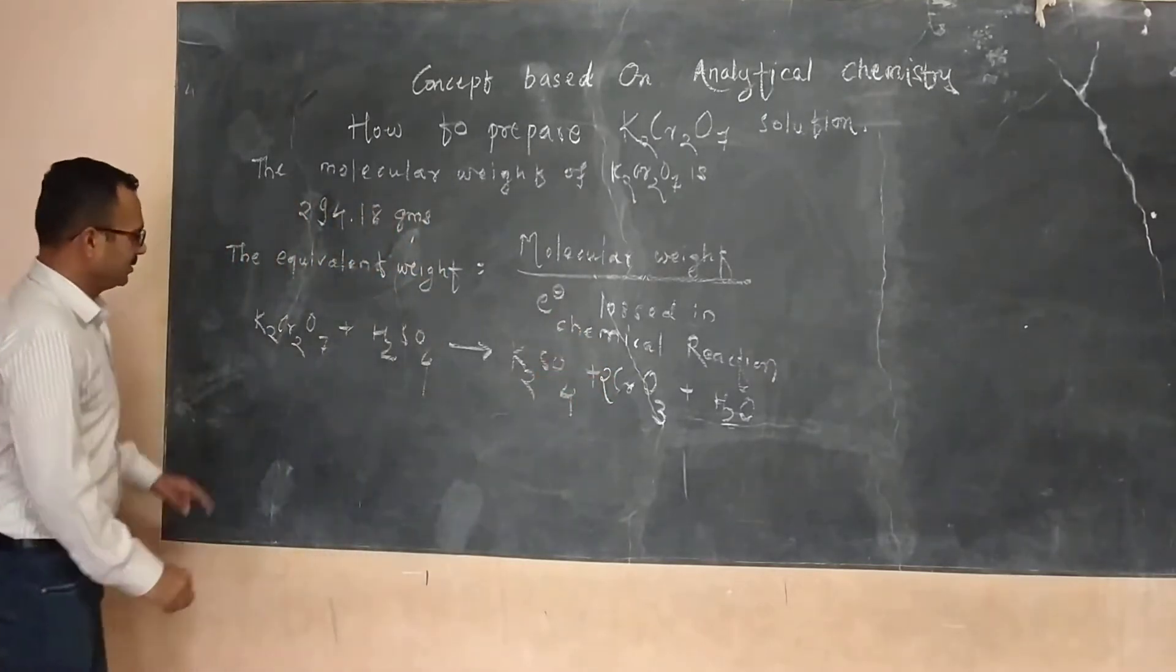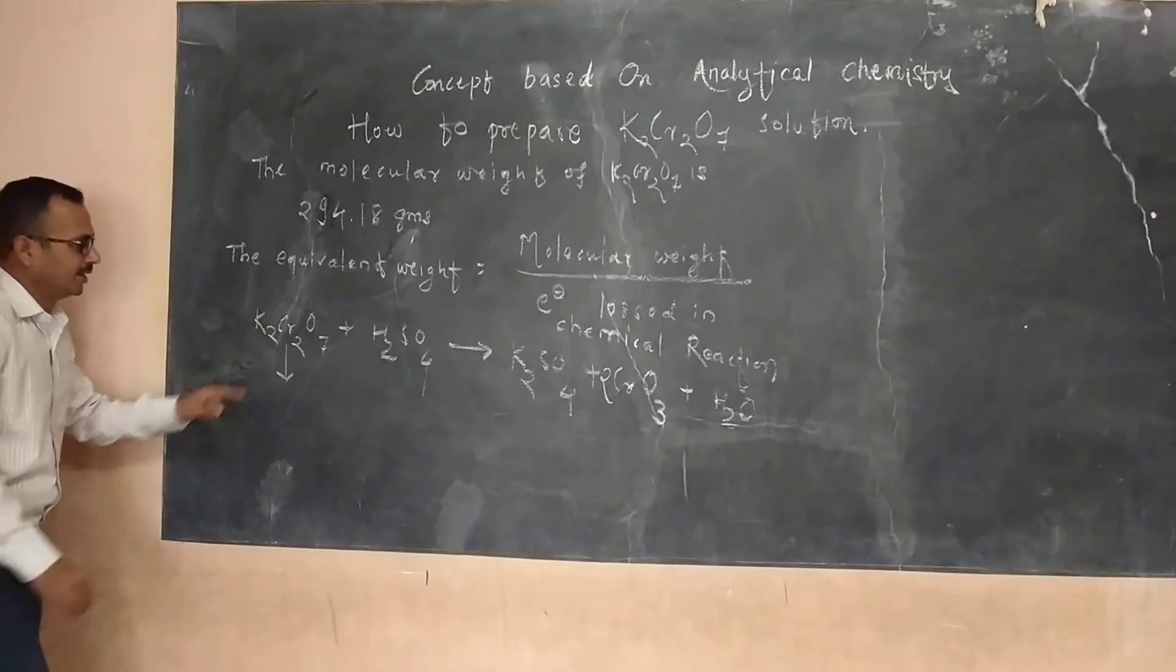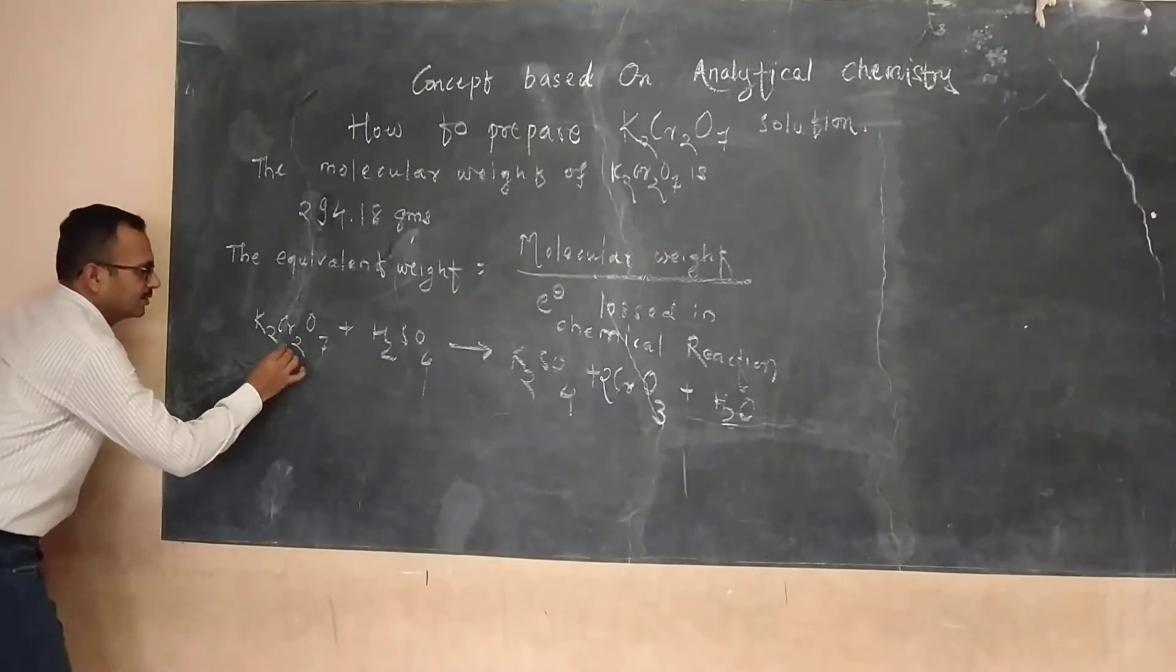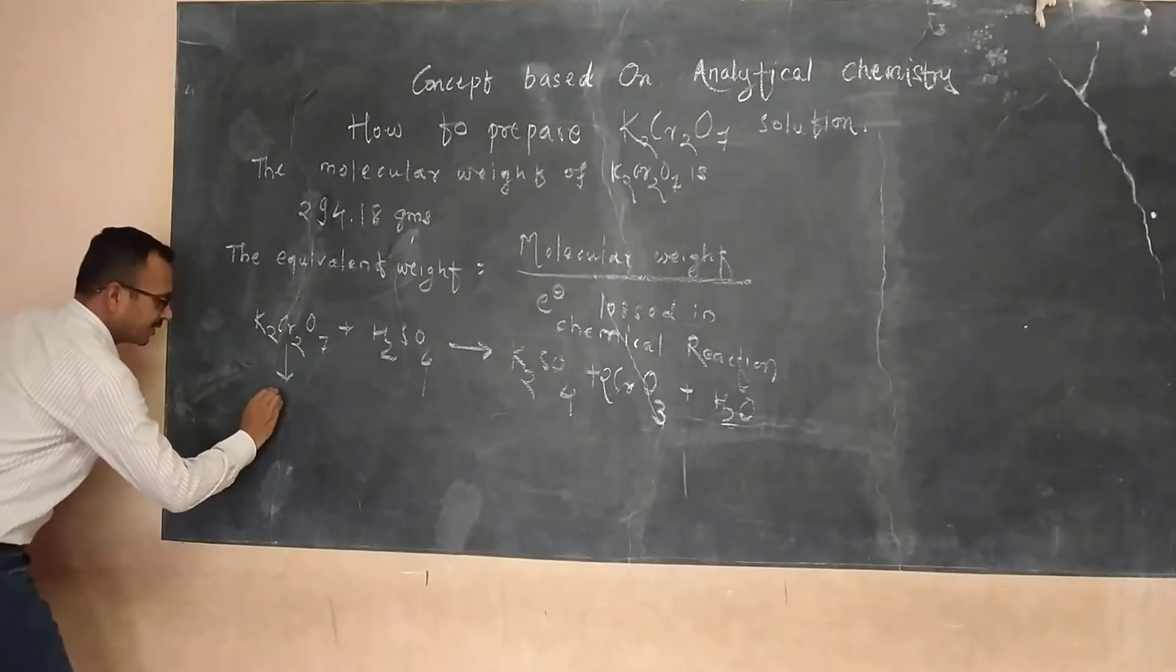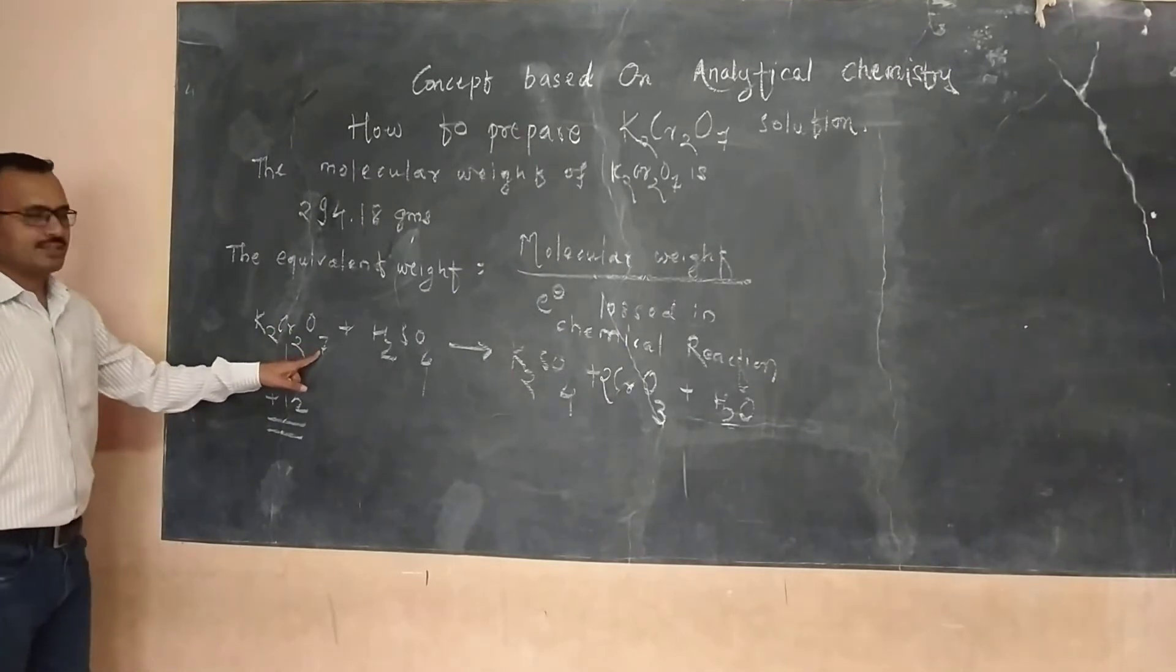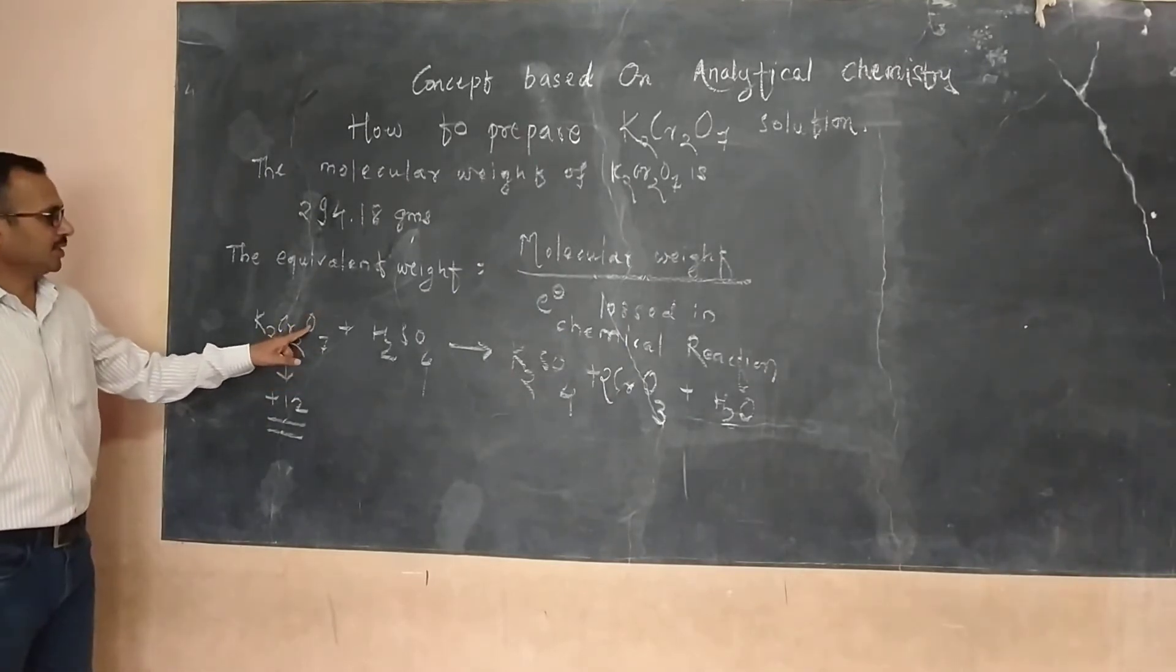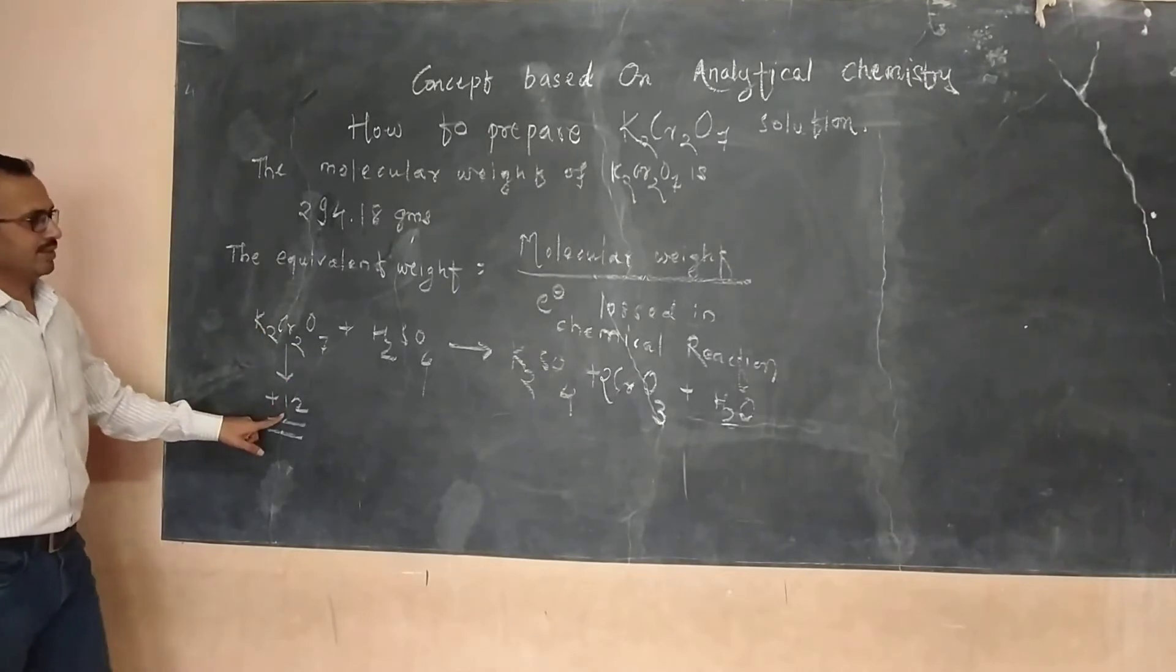Here, the central chemical atom, that is chromium, has an oxidation number. If we calculate the oxidation number, it is 7 times minus 2, that is minus 14, minus 14 plus 2, it is plus 12.